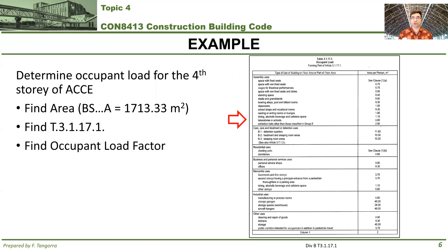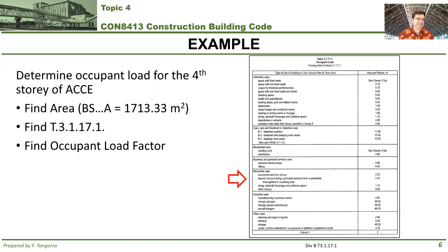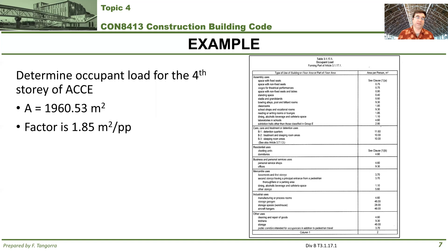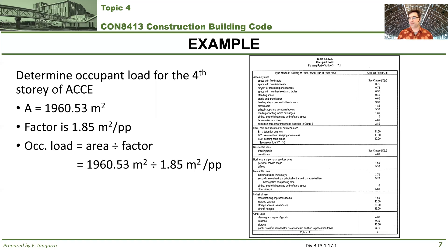We have to determine what the major occupancy is for the ACE building so we know which row to use. Using Appendix A correctly, we find that the best candidate for the major occupancy of the ACE building is A2. When I look in that row at all the uses available, the best one is classrooms. Classrooms carries a factor of 1.85 meters squared per person. We now have the area and the factor. Dividing 1,960.53 square meters by 1.85 meters squared per person equals 1,059.74594 and so on.